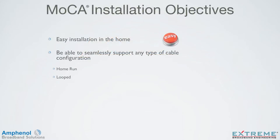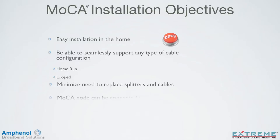The MOCA signal is very robust and can work in both of these cable configurations as long as good quality passive devices and connectors are used and installed properly. There should be minimal need to replace splitters and coaxial cables. And lastly, any MOCA device, called a node, will be able to communicate with any other MOCA-enabled device.